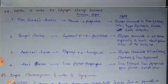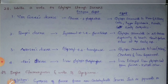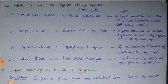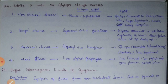Second is Pompe's disease, due to deficiency of lysosomal alpha-1,4-glucosidase enzyme. Symptoms include glycogen accumulation in all tissues, especially the heart, causing heart failure at an early age. Third is Anderson's disease, due to glycosyl-4,6-transferase enzyme deficiency, where glycogen accumulates in the liver.